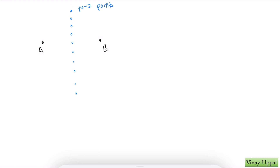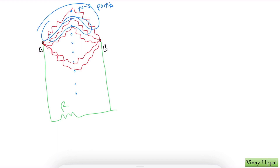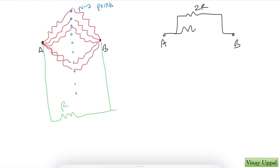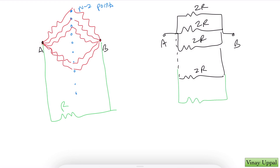Therefore, the only current that will flow is from A to one of these intermediate points and then to B, and so on. Of course, I will have one resistance connecting A and B directly. So, all these pairs of resistances will now be in series. I can just redraw my diagram as 2R, 2R, 2R — and all of these will be in parallel. How many 2R resistances will I have? I have n minus 2 points, so I will have n minus 2 such rows of 2R. And finally, I will have a resistance connecting A and B directly of R.